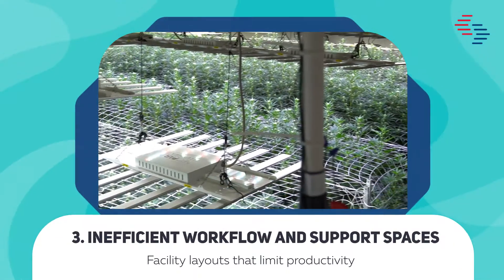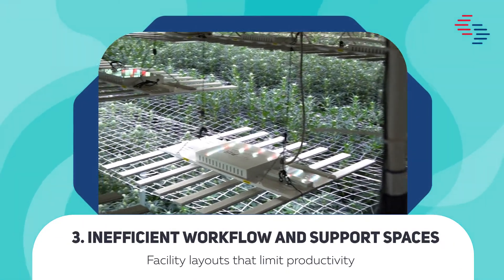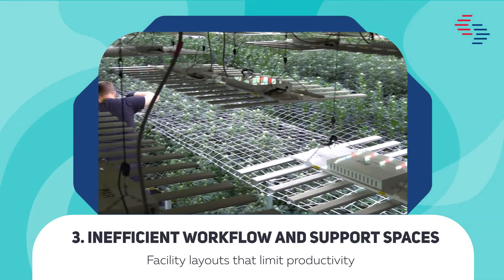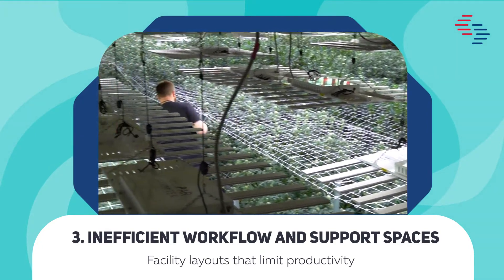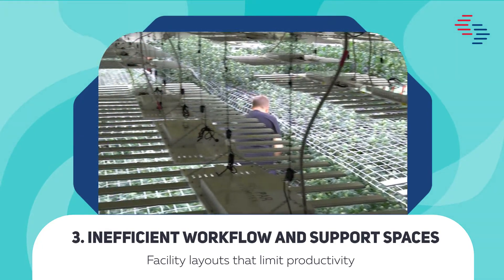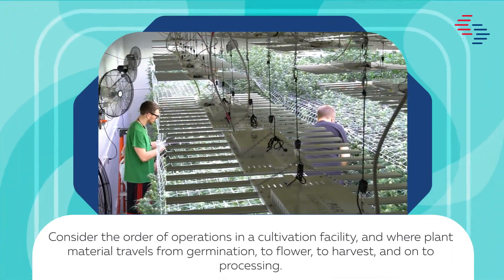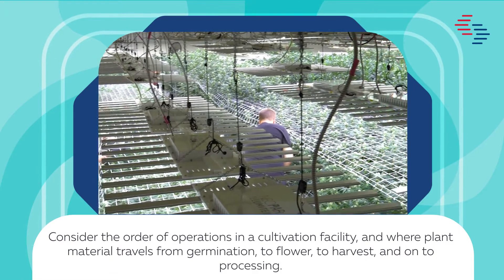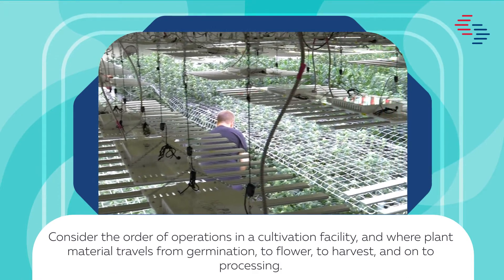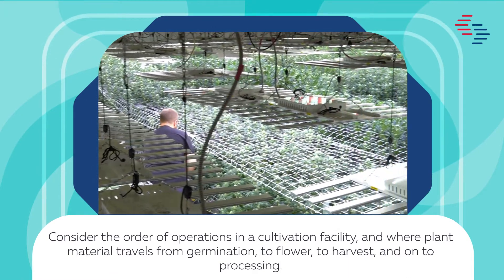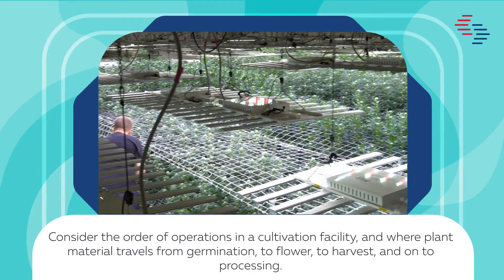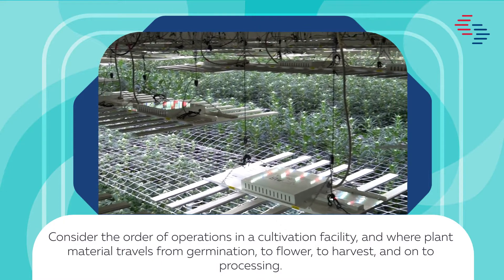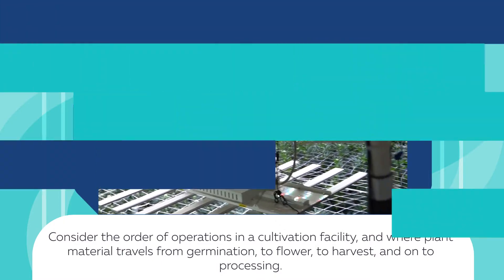Number 3: Inefficient Workflow and Support Spaces. Facility layouts that limit productivity. Consider the order of operations in a cultivation facility, and where plant material travels from germination to flower, to harvest, and on to processing.